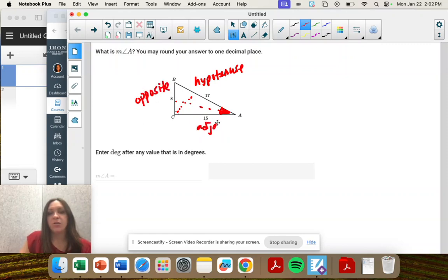So we need to figure out which sine, cosine, or tangent, which trig function to use. So for this example, since we have all three sides, you pick. It doesn't matter.